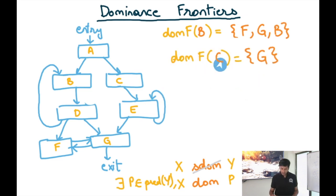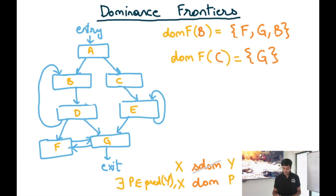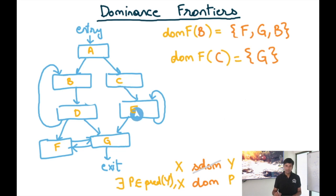Now let's look at the dominance frontier of C. Is E in the dominance frontier of C? No, because C actually strictly dominates E. But G is in the dominance frontier of C because C does not strictly dominate G, but C dominates a predecessor of G, which is E.